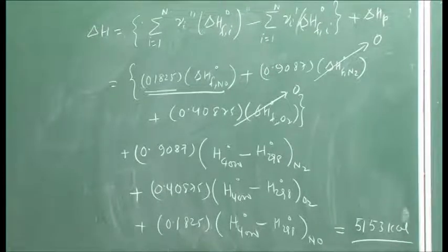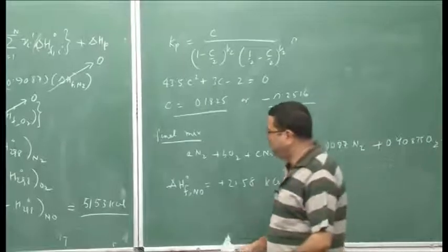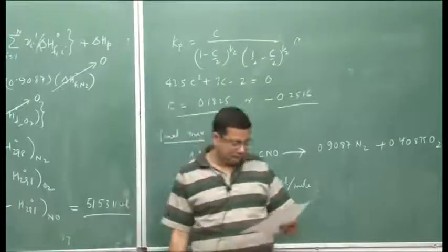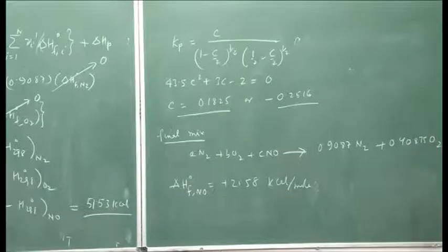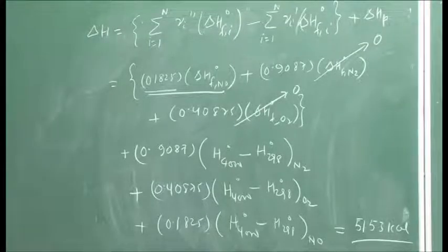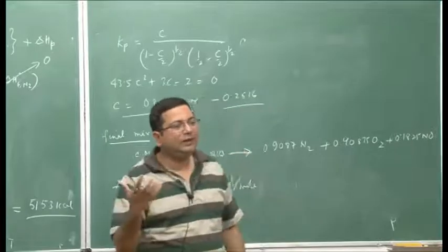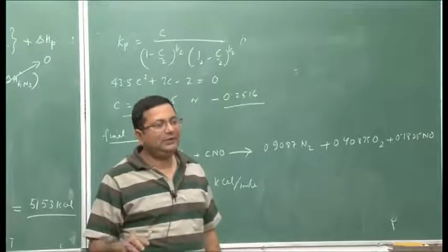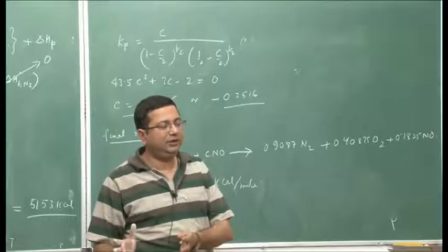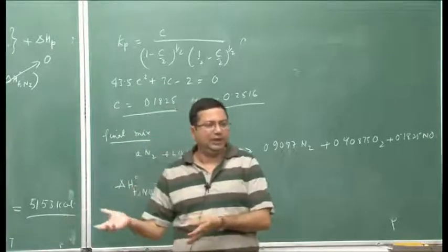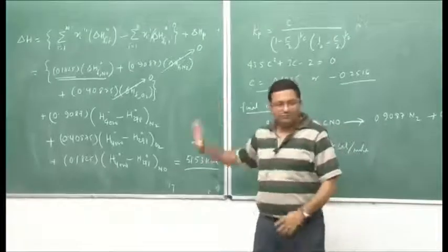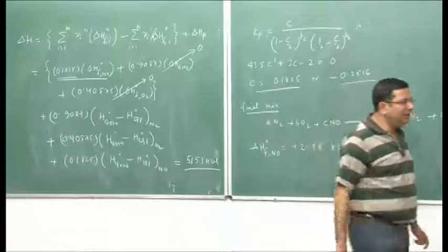So 5.53 kcal of heat must be supplied to carry out this reaction. This is an endothermic reaction, so that much heat is required. In this problem we showed first how to estimate the final composition and then, instead of solving for adiabatic flame temperature, we determined how much heat is required when the flame temperature is known.